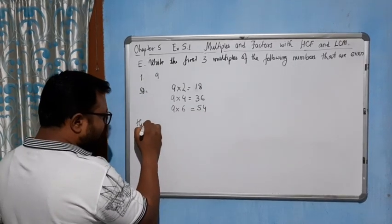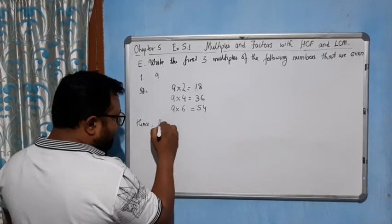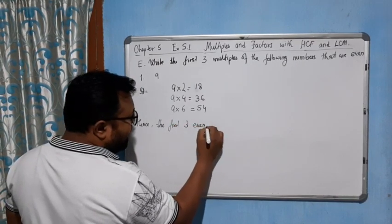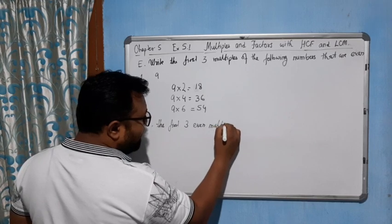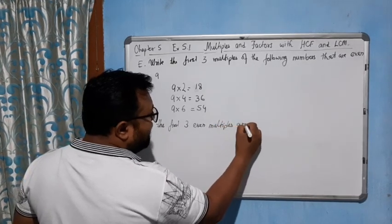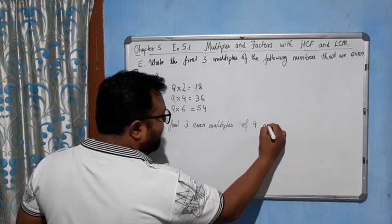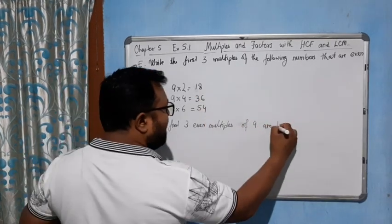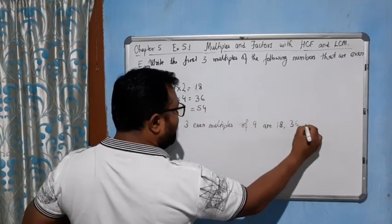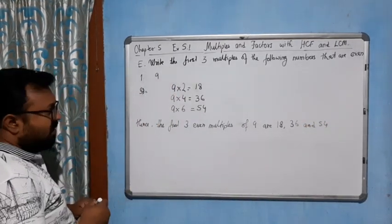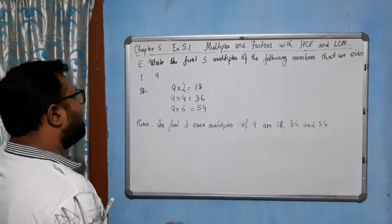Hence, the first three even multiples of 9 are 18, 36, and 54.